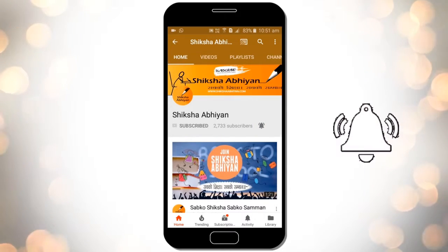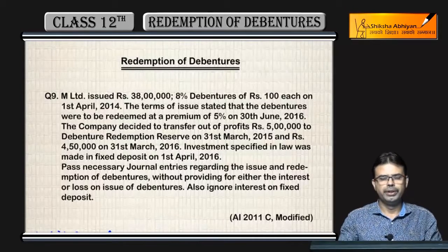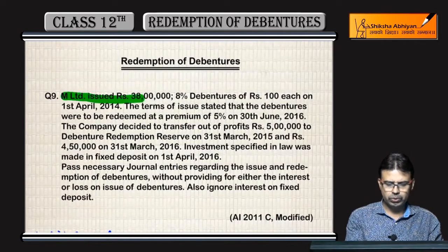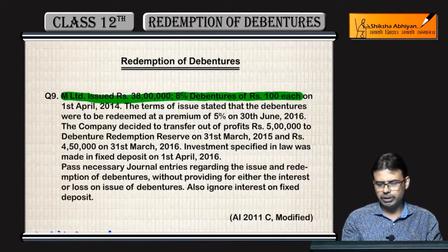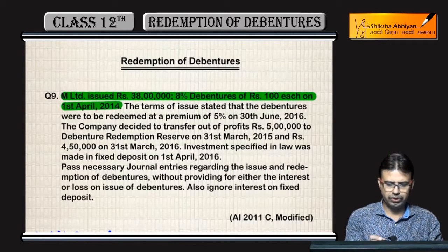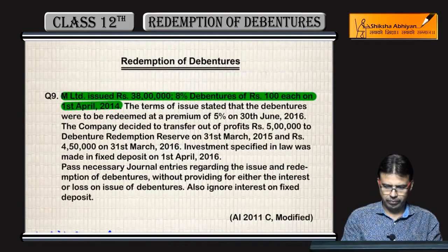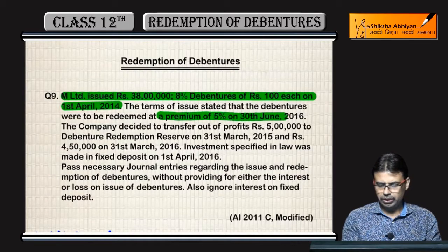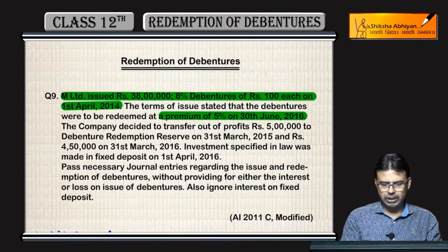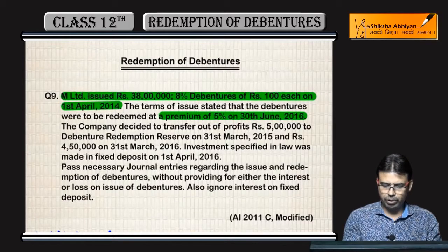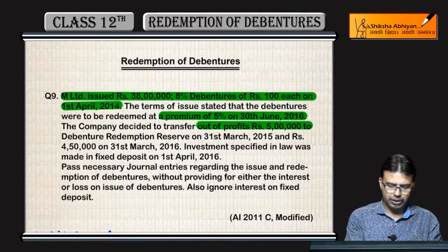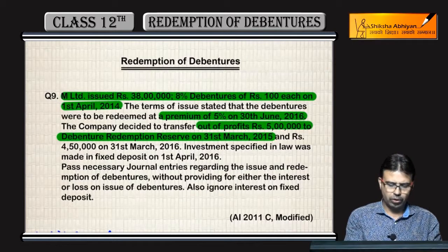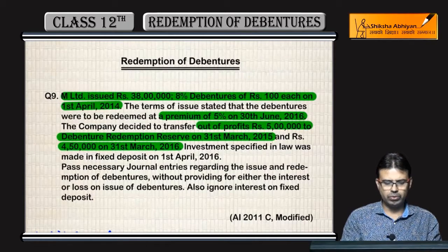Next question: M Limited issued ₹38 lakh, 8% debentures of ₹100 each on 1st April 2004. The debentures are redeemable at a premium of 5% on 30th June 2016. The company transfers ₹5 lakh to DRR from profits on 31st March 2015, and ₹4 lakh 50,000 on 31st March 2016.